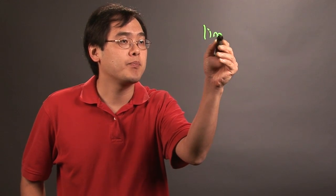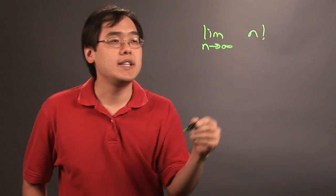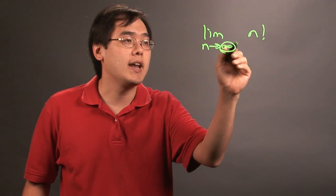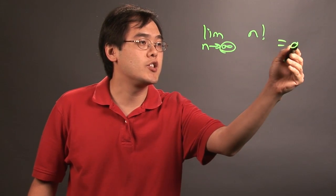So, for example, if you have the limit as n approaches infinity of n factorial, the idea here is you have to look at what it is approaching and how the function is set up. So in this particular case, you have a situation where it's just going to be infinity.